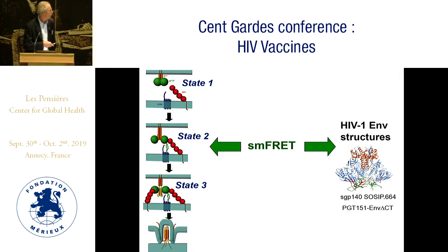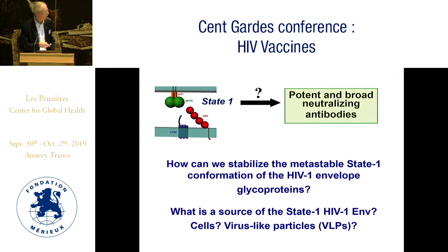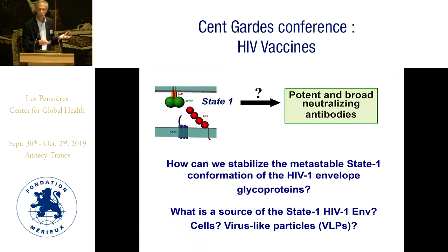SM-FRET studies suggest that these structures are actually corresponding mostly to this default conformation, state 2. This work has led us to question what state 1 is, and to raise the hypothesis that if we could present state 1 to the immune system in a more consistent way — if we could somehow enrich state 1 in our immunogens — might we do better at eliciting potent and broadly neutralizing antibodies than we're currently doing?